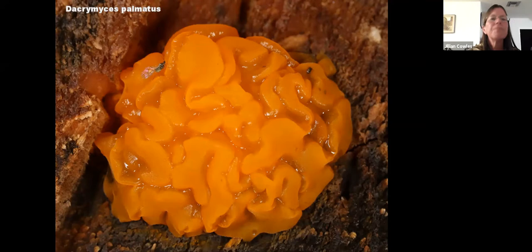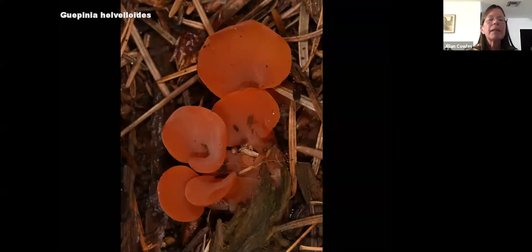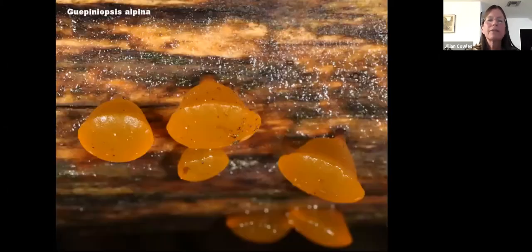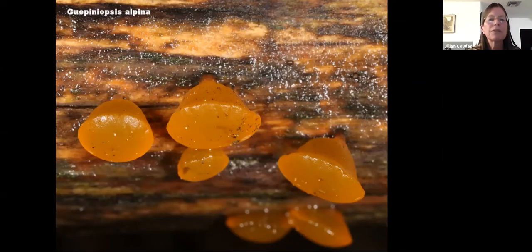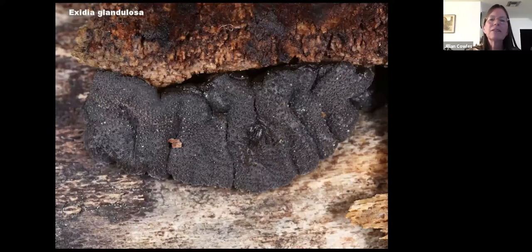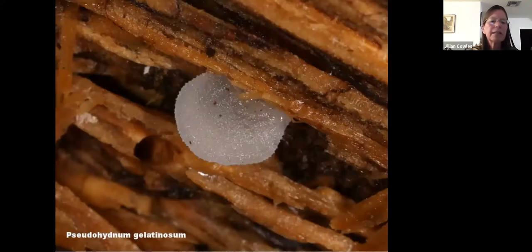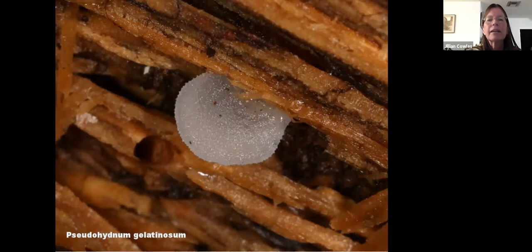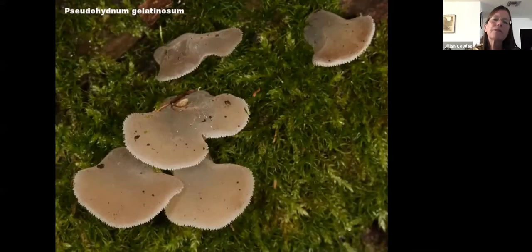Now for some jellies — we're still in the Basidiomycetes. This is Dacryomyces and Guepinia. These jellies always have the most beautiful sculptural qualities. This kind of little jelly is quite tiny — less than a centimeter, probably about five millimeters across. You can have black jellies like Exidia glandulosa, which looks a little warty, and white jellies like Pseudohydnum gelatinosum.